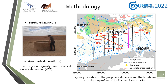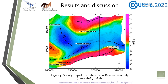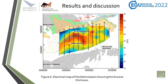Here are some results of our study. The figure shown here is the gravity map of the Bahia Basin. It provides a general view of the gradual increase of the sedimentary cover thicknesses toward the south of the basin. The various results highlight the thickness changes of the Eocene formation, which range between 50 and 90 meters.